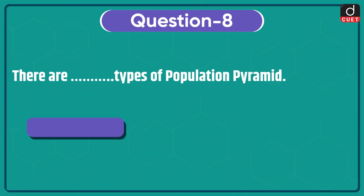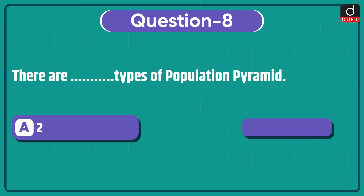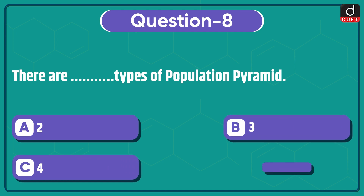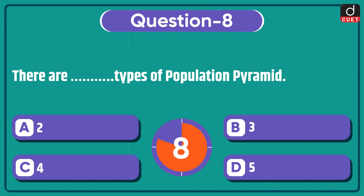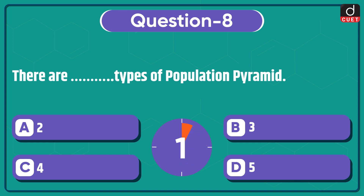Next question: there are dash types of population pyramid — two, three, four, or five? The correct answer is option B, three.